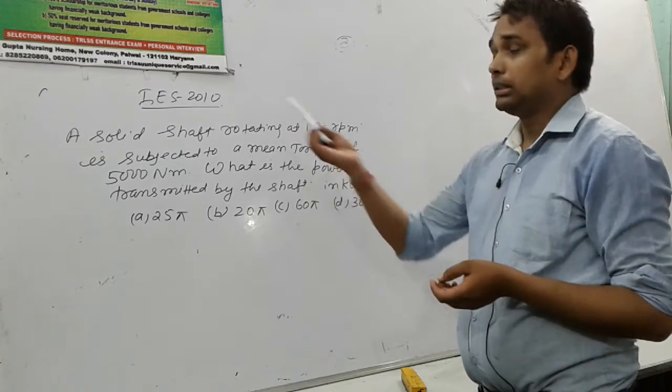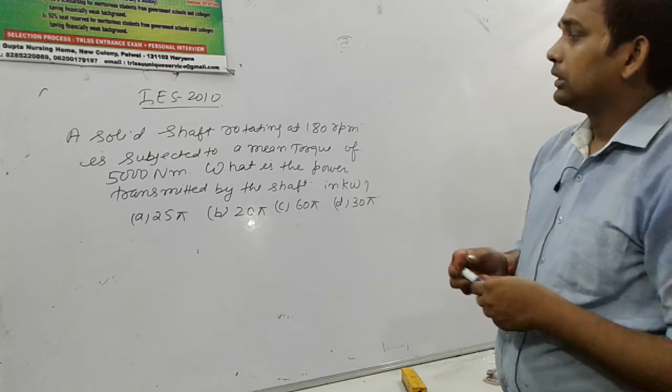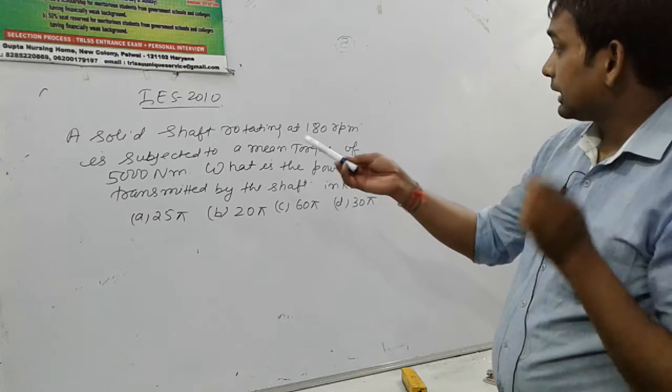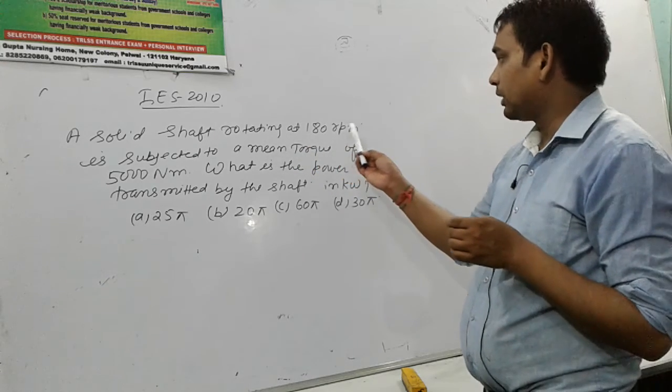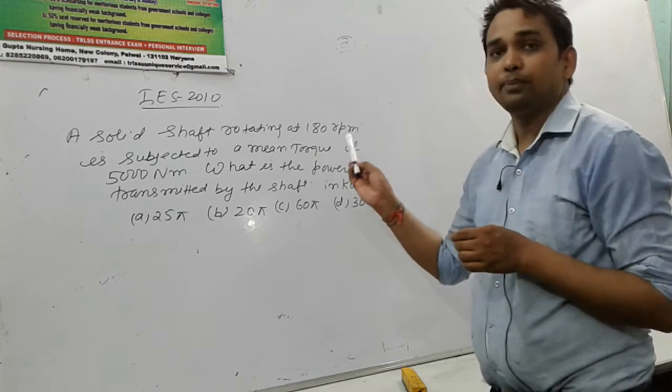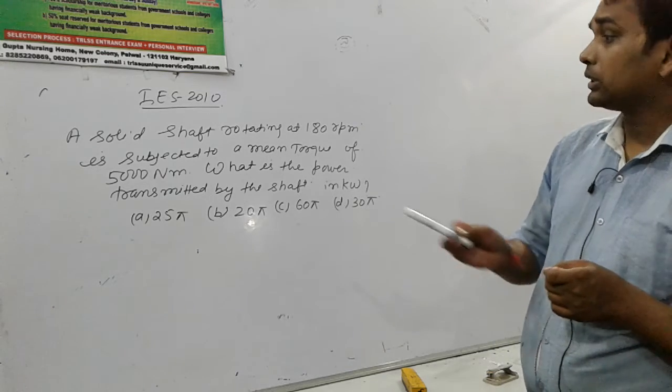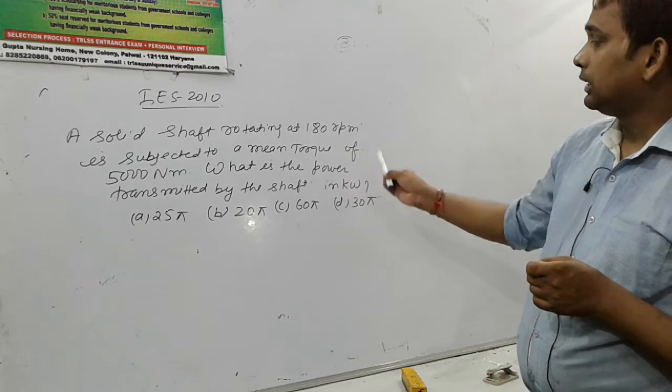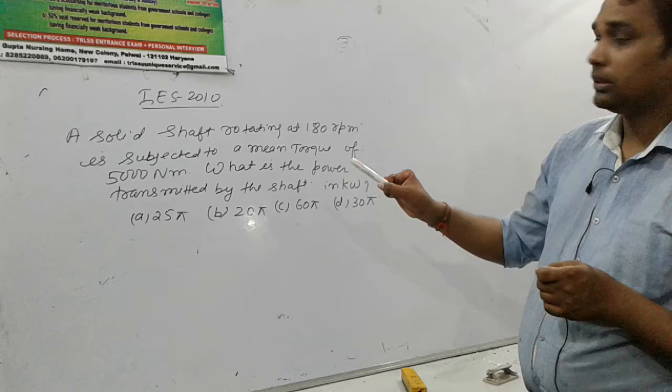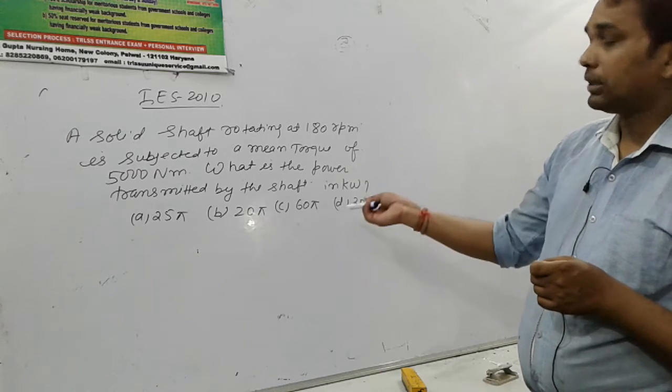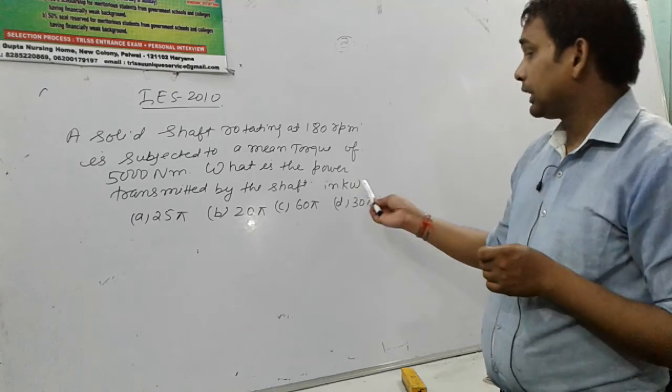We will solve the question. In this question, it is given that a solid shaft rotating at 180 RPM. RPM is the revolutions per minute. It is subjected to a mean torque of 5000 Newton meter. What is the power transmitted by the shaft in kilowatt?